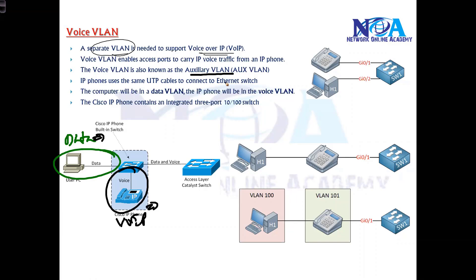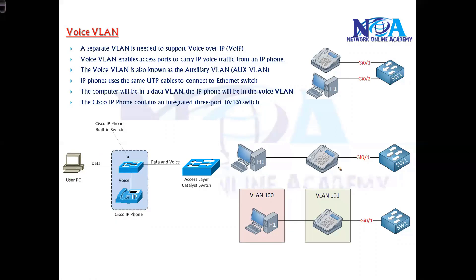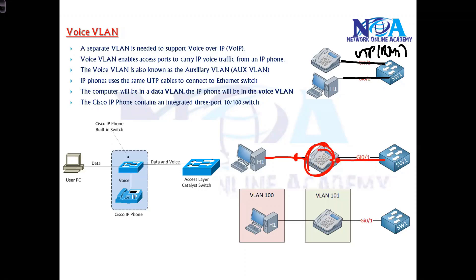There are two ways to connect, as I mentioned. You can connect a separate port using a UTP cable with an RJ45 connector, or you can have an inbuilt switch where you can connect both ports — one port goes to the switch and the other side goes to the PC. So two ways.